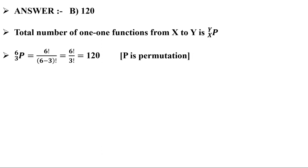Here Y is 6 and X is 3, so total number of one-one functions will be ⁶P₃, and that is equal to 6! / (6-3)!. That is 6! / 3!, and that can be simplified as 120.